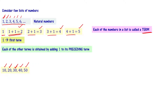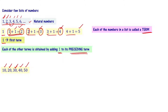If you look at it, each of the terms is obtained by adding the number 1 to its preceding term. The first term is 1, the next term is 2 — that is the preceding term 1, plus 1. The next term is 3 — that is the preceding term 2, plus 1. The next term is 4 — that is the preceding term 3, plus 1. So each of the terms in this particular list are obtained by adding one to their preceding terms.